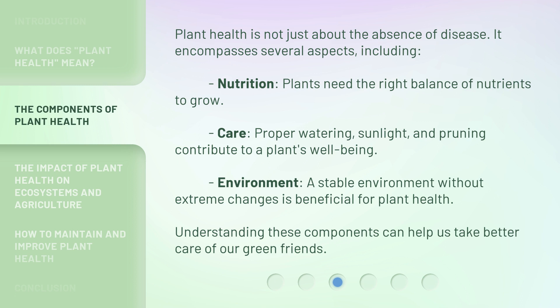Plant health is not just about the absence of disease. It encompasses several aspects, including Nutrition — plants need the right balance of nutrients to grow. Care — proper watering, sunlight, and pruning contribute to a plant's well-being. Environment — a stable environment without extreme changes is beneficial for plant health. Understanding these components can help us take better care of our green friends.